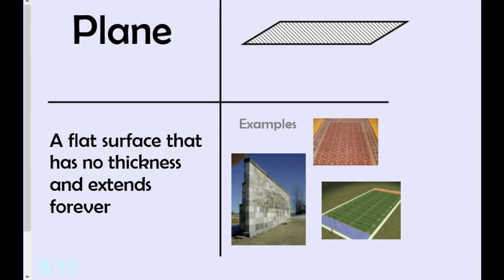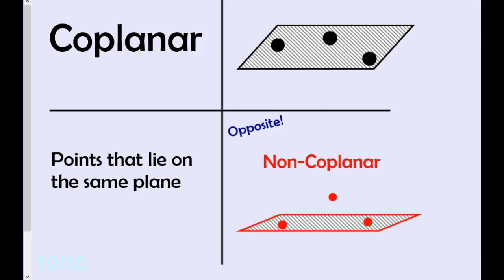Planes are flat surfaces that extend forever with no thickness. Anything that's flat is part of a plane. And coplanar is where points share a plane, are on the same plane.